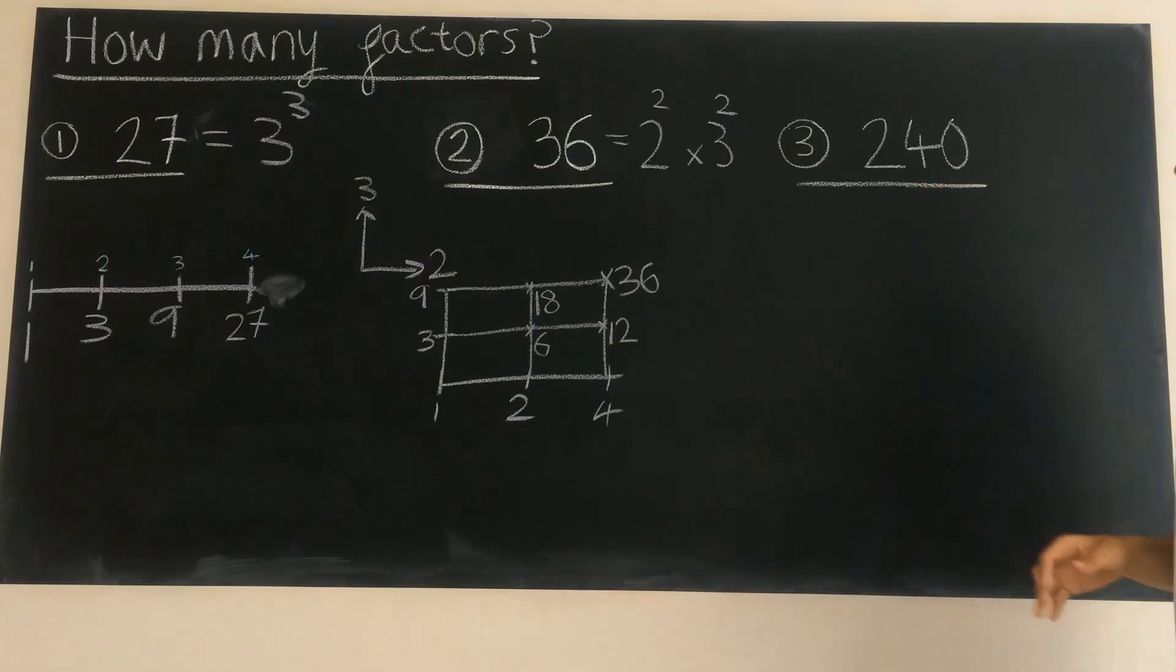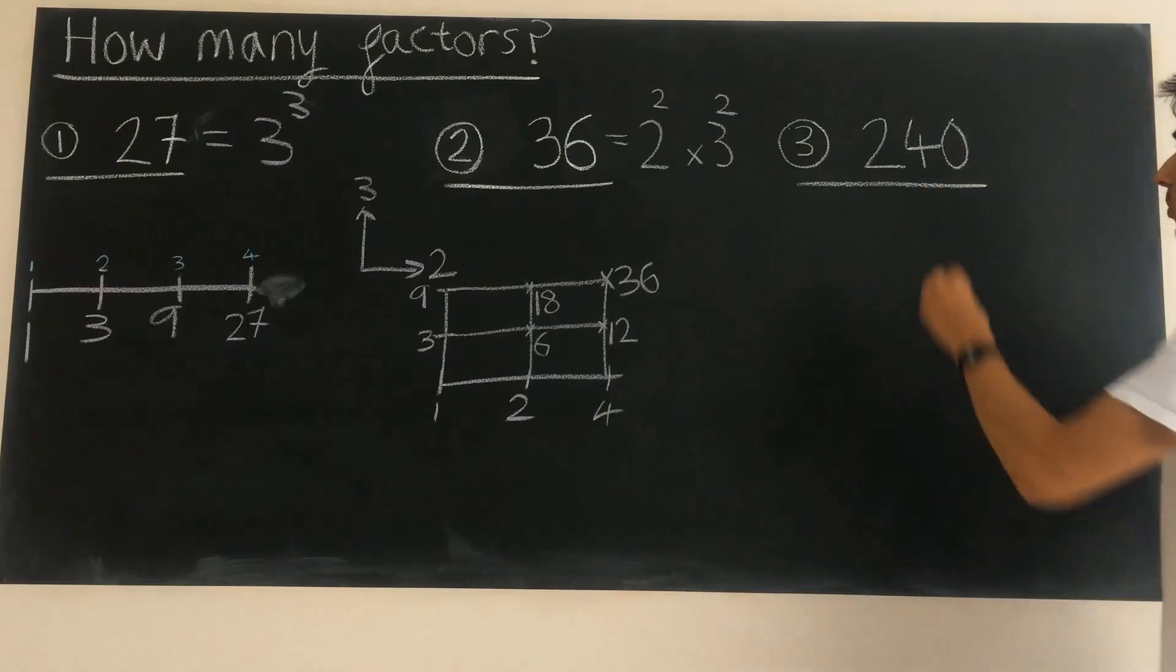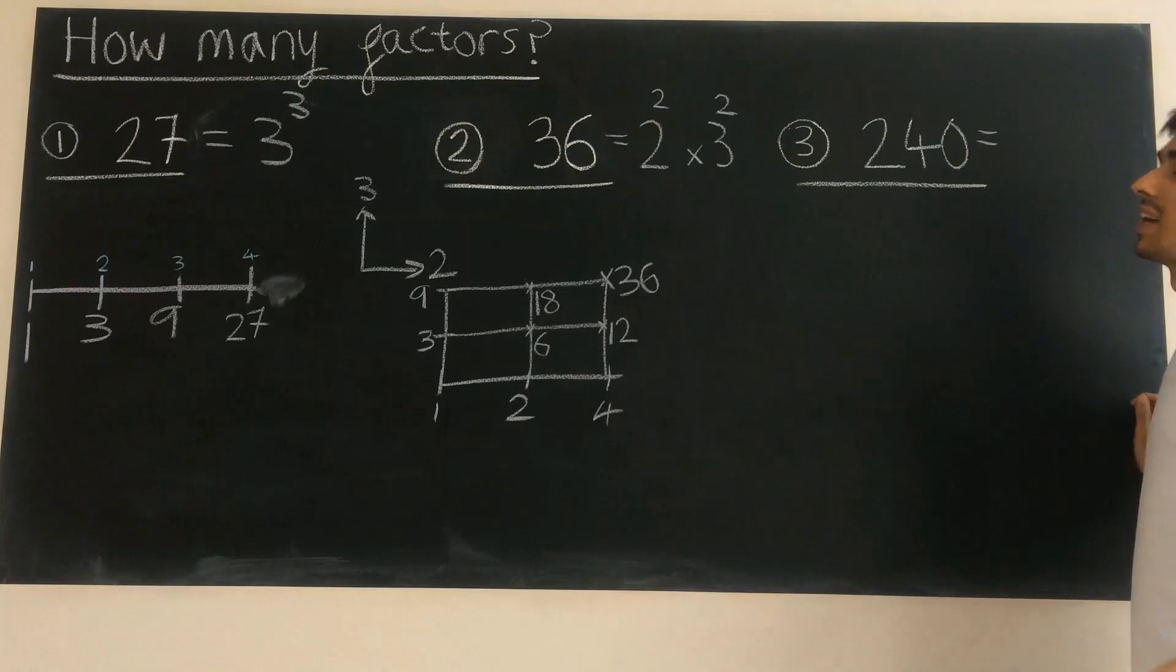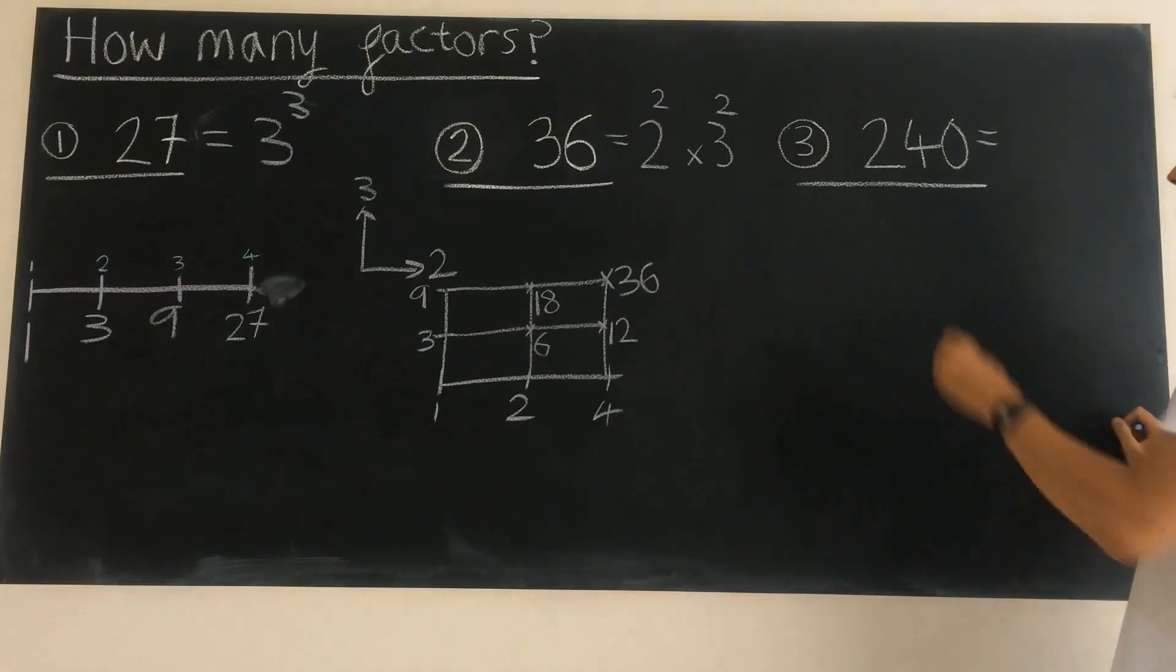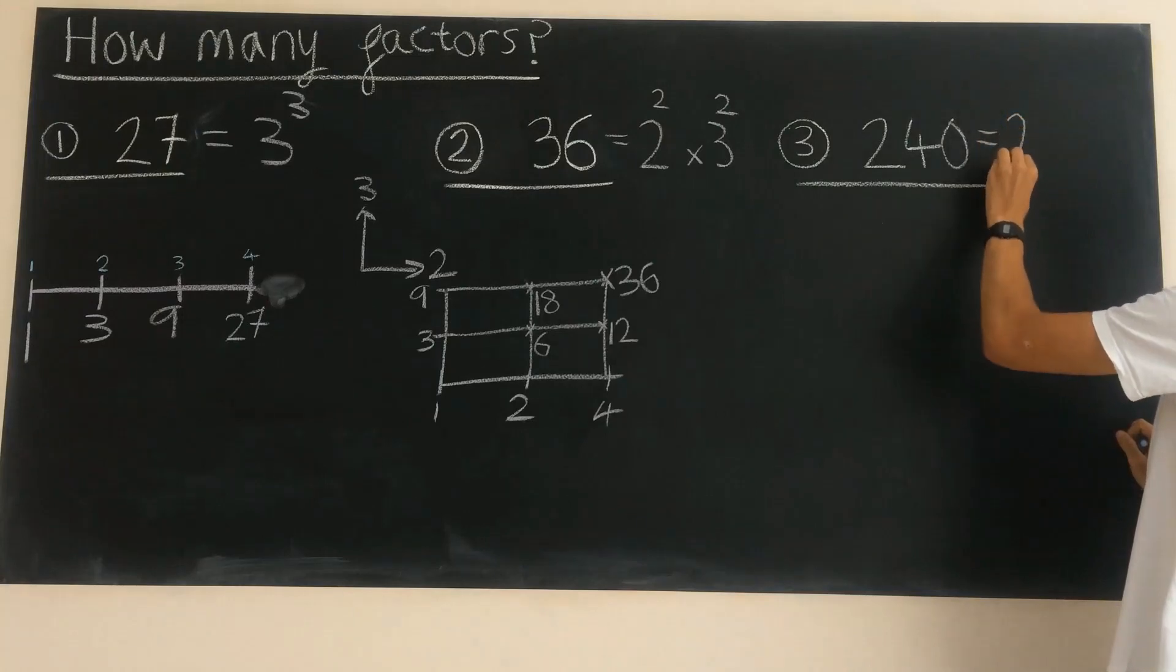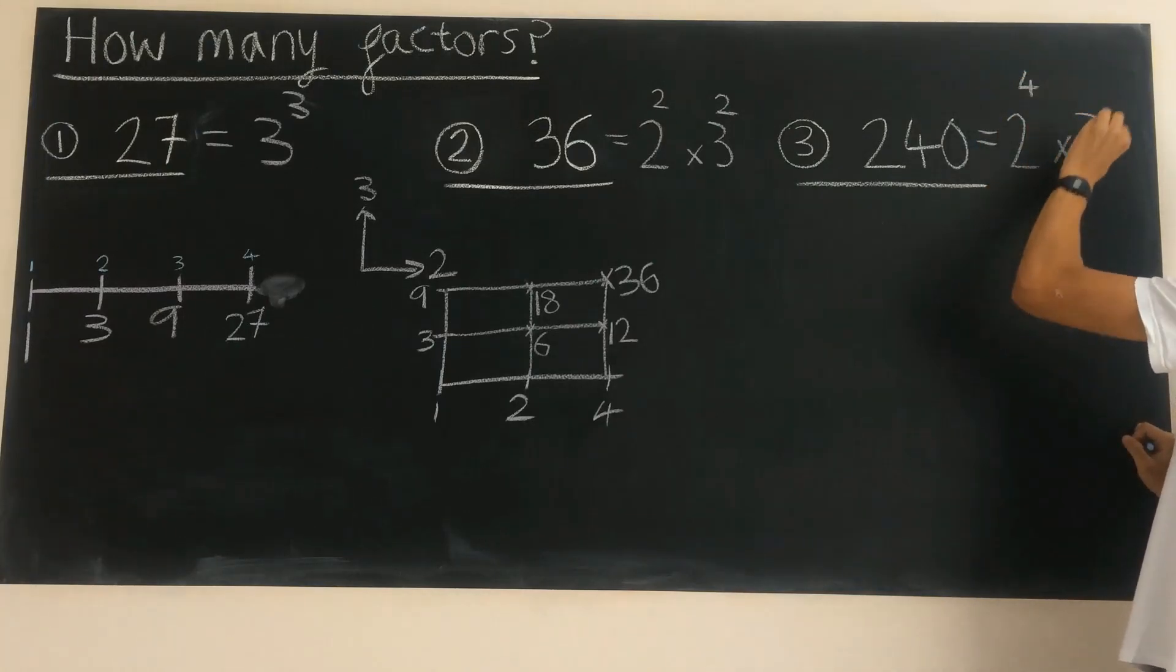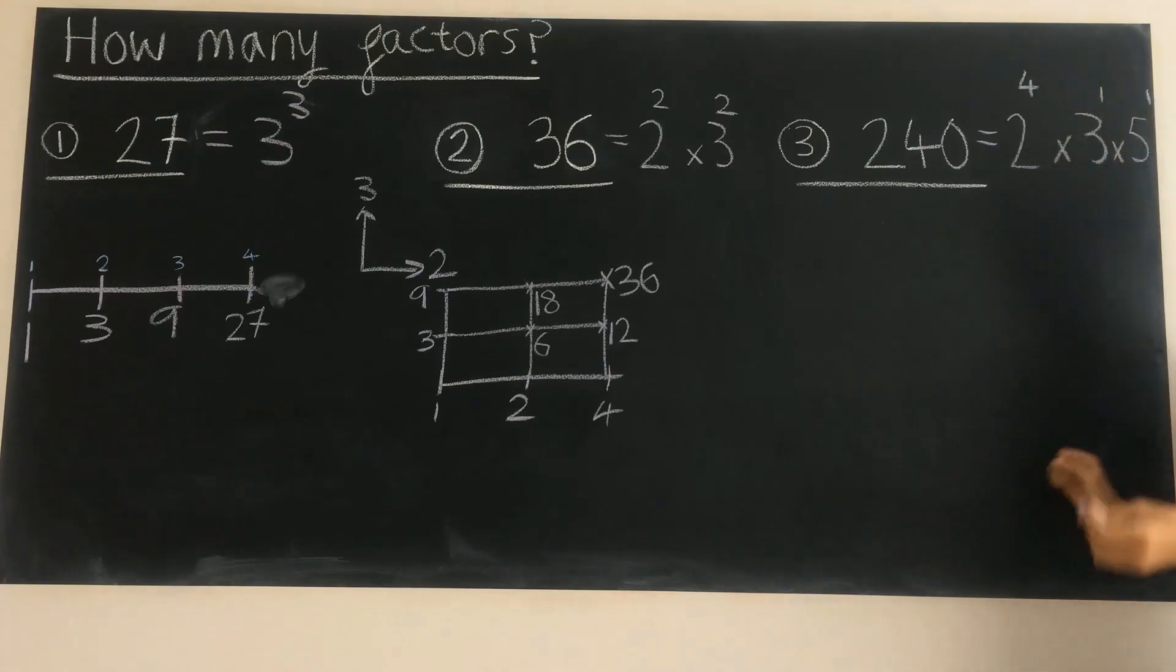Looking at one more tricky example then, 240. And 240 has got even more prime factors. It's got some powers of 2, so it's got 2 to the power of 4. It's also got a 3 to the power of 1, and it's also got a 5 to the power of 1.